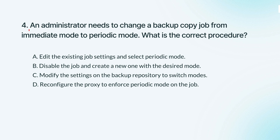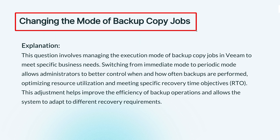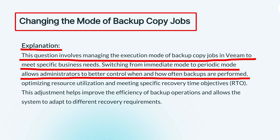Question 4. An administrator needs to change a backup copy job from immediate mode to periodic mode. What is the correct procedure? The knowledge points of this question are changing the mode of backup copy jobs. This is about how to change a backup job from running immediately to running on a schedule, allowing better control over when backups happen, which can help manage resources and meet recovery time goals more effectively.